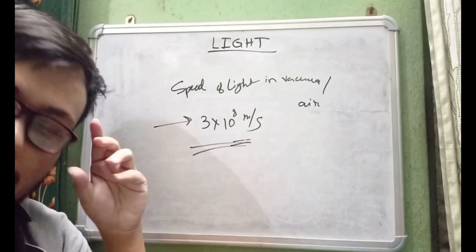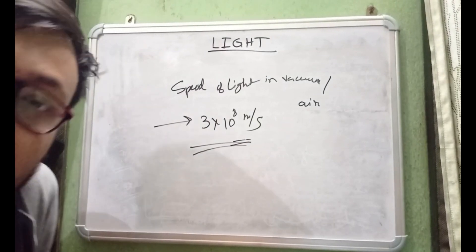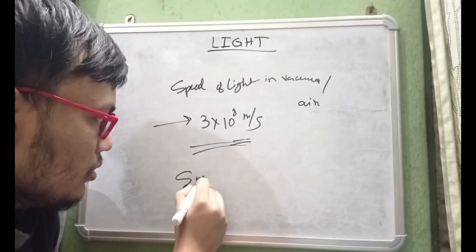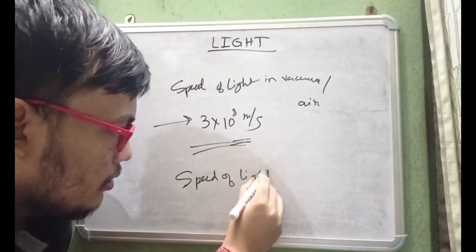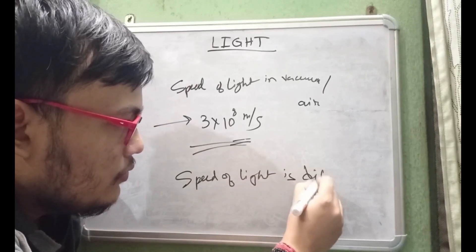Speed of light is different for different mediums. This is the basic cause of refraction — the speed of light is different for different mediums, so when it passes from one medium to another, the speed will increase or decrease, causing bending of light and hence refraction.